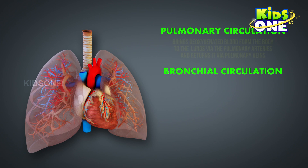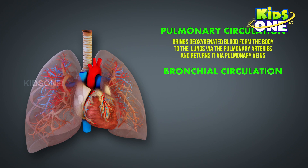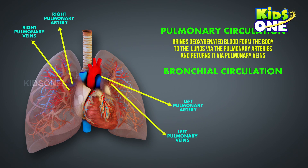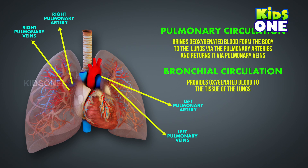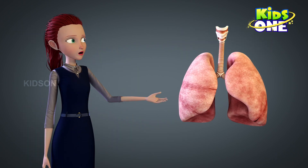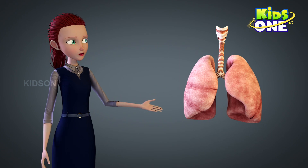The pulmonary circulation brings deoxygenated blood from the body to the lungs via the pulmonary arteries and returns it via the pulmonary veins. Meanwhile, the bronchial circulation provides oxygenated blood to the tissue of the lungs.